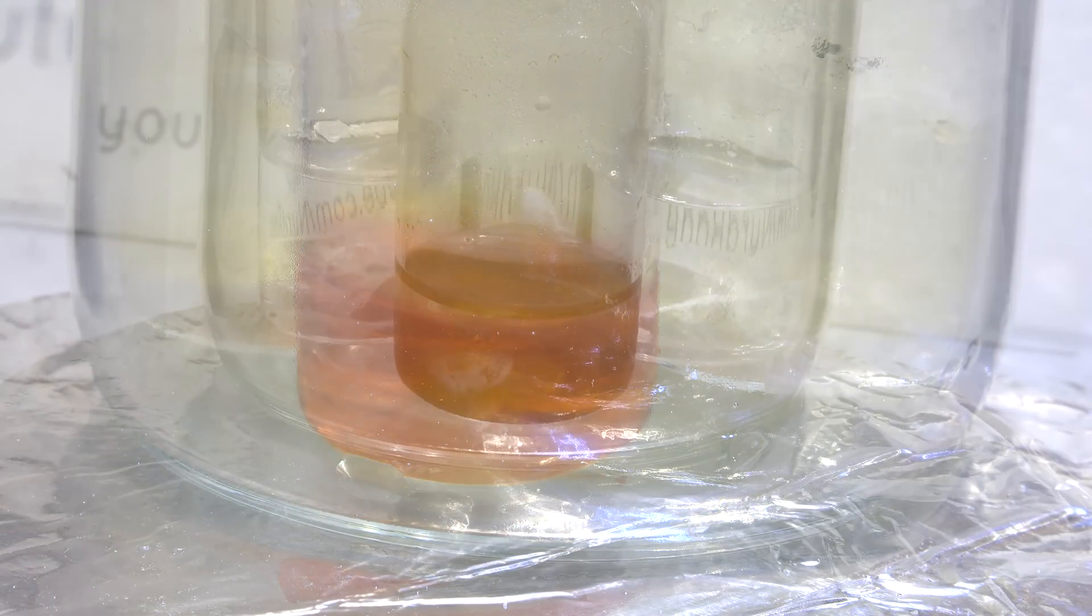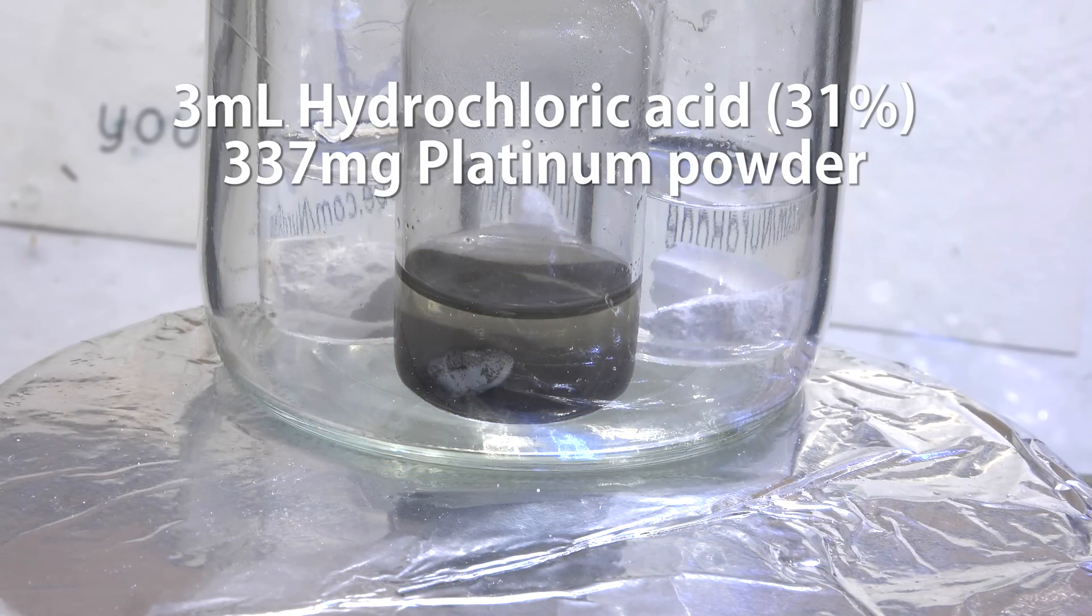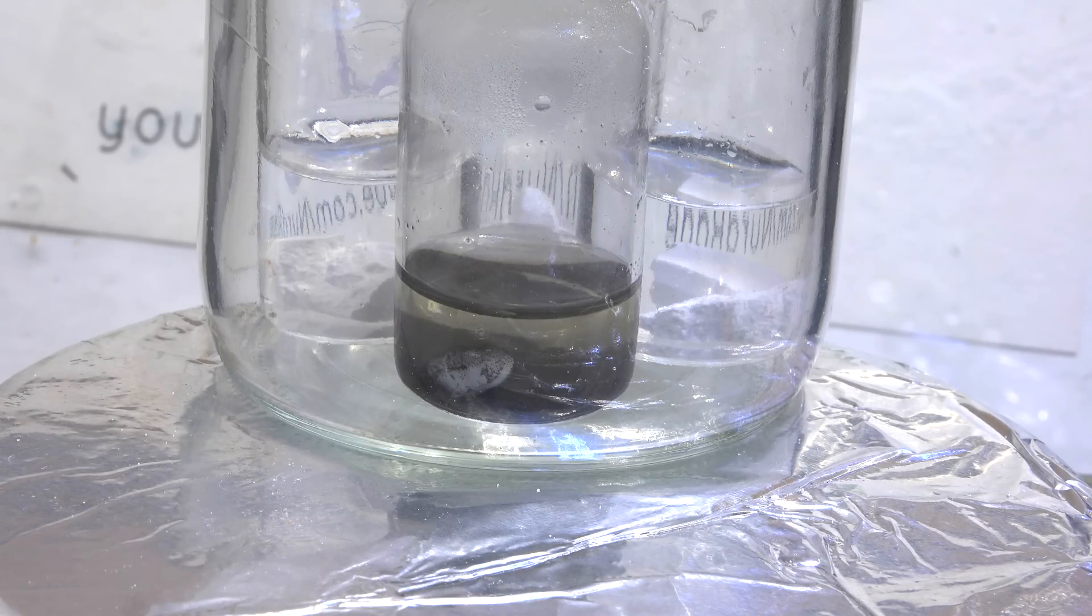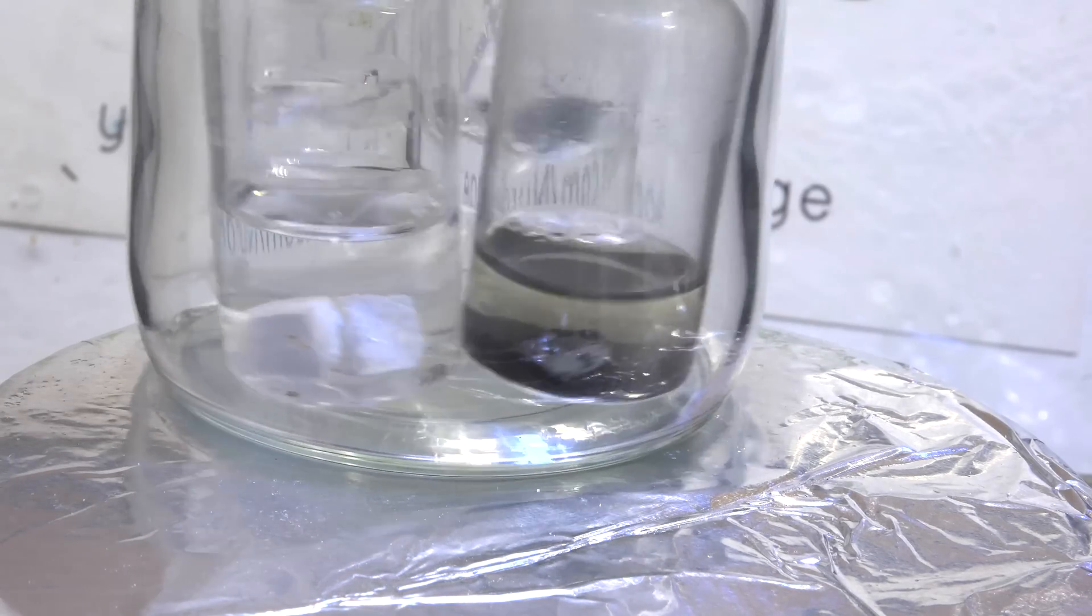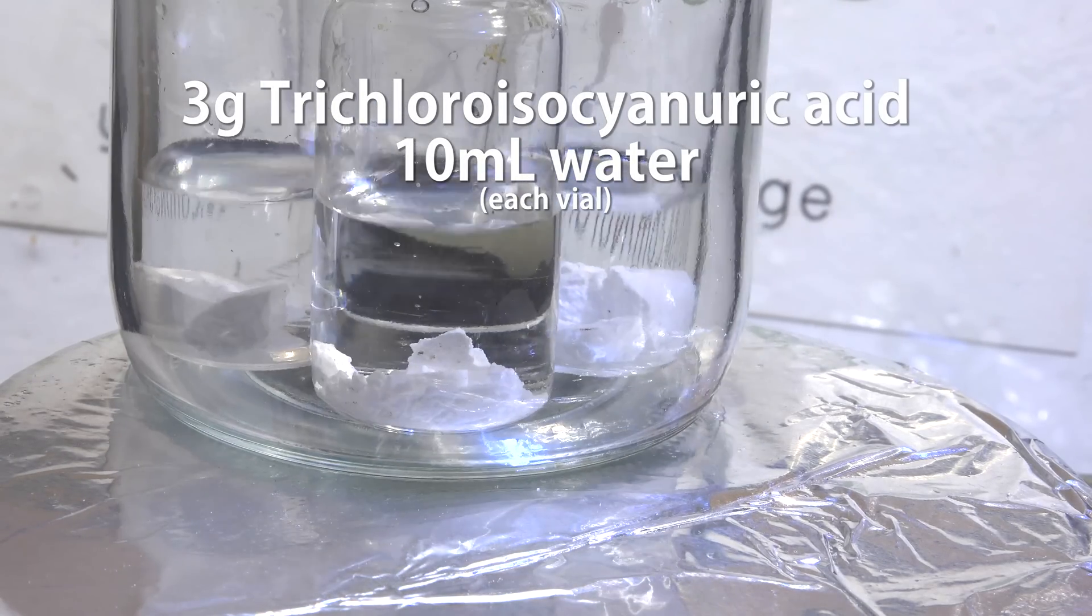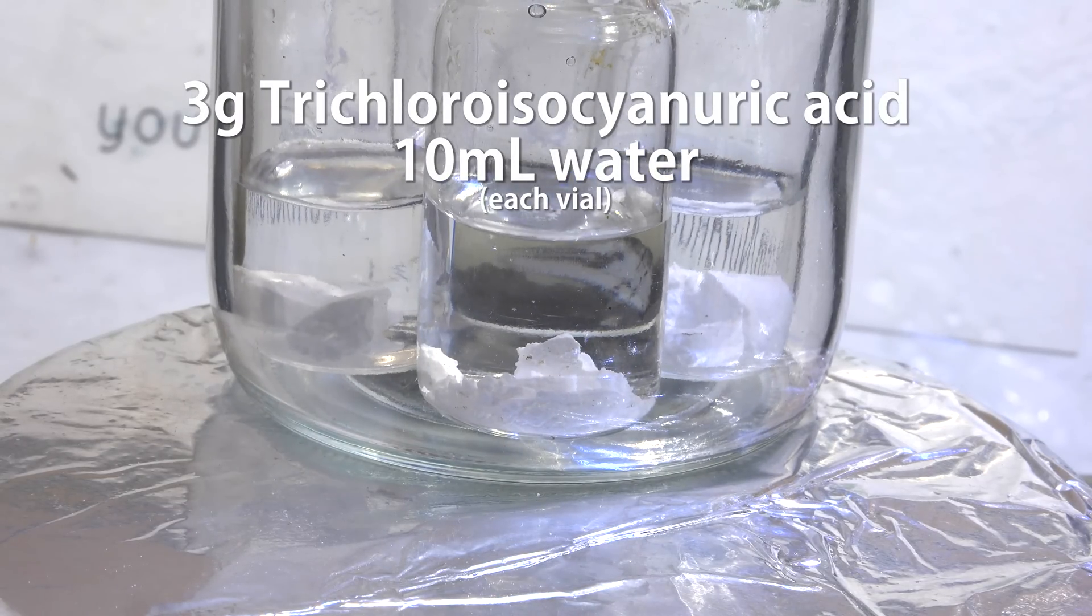To do this is actually pretty simple. Here I have a jar, and in front you can see a vial containing 3mL of hydrochloric acid and 337mg of platinum metal powder. This is actually the same platinum metal powder we made in a previous video on refining platinum. In the back of the jar there are 3 vials containing 3g each of trichloroisocyanuric acid in 10mL each of water.